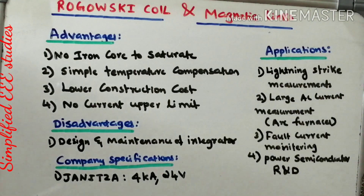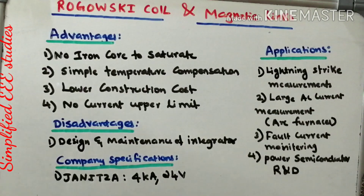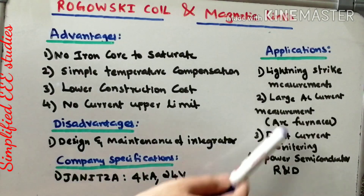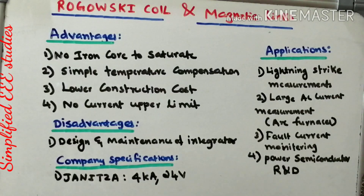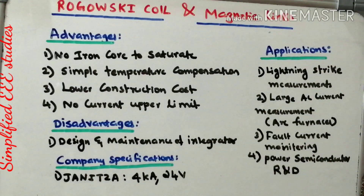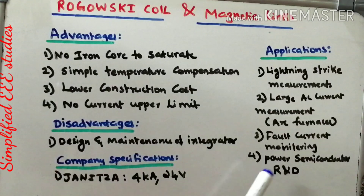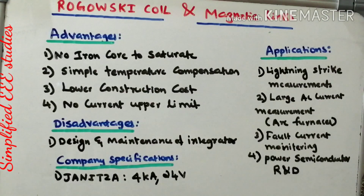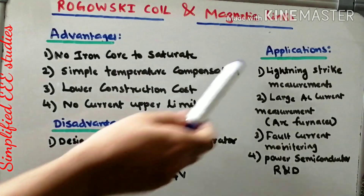Now let us discuss the applications. The first is lightning strike measurement — it is possible to measure lightning strikes using the Rogowski coil. Similarly, it can be used for large AC current measurement in arc furnaces. It can also monitor fault current. Additionally, it is useful in the design and R&D of power semiconductor devices.